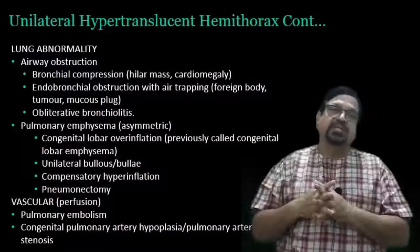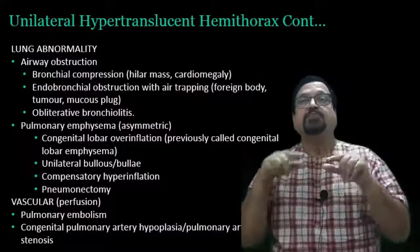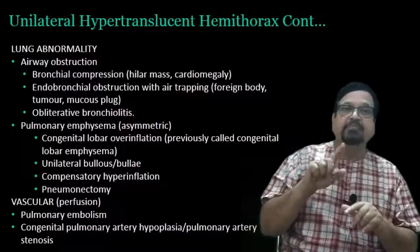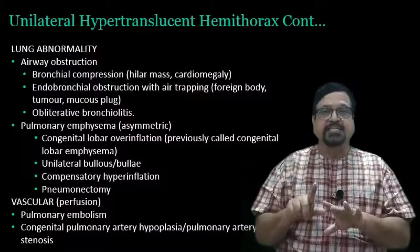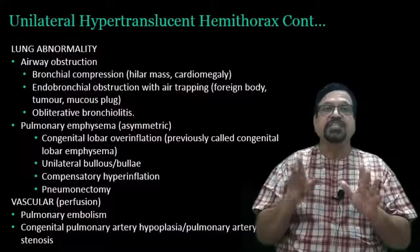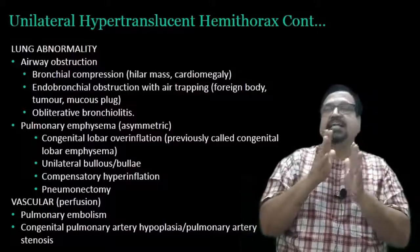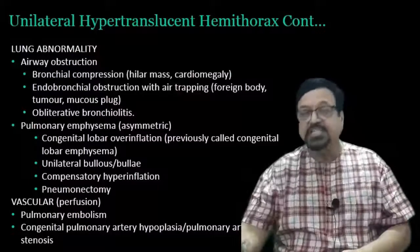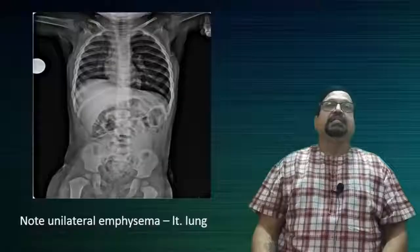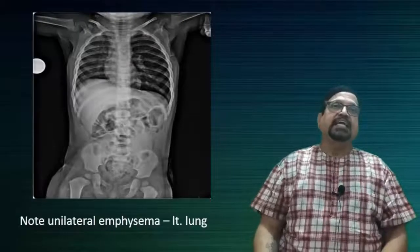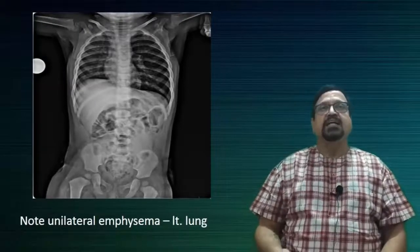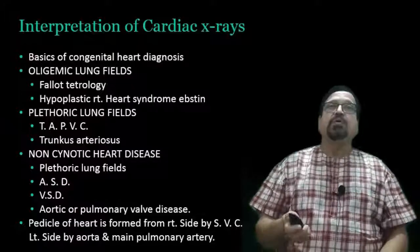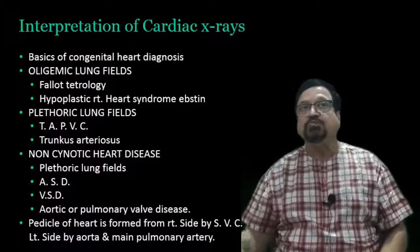Then there are vascular causes. Vascular causes include pulmonary embolism. Second, congenital pulmonary artery hypoplasia or pulmonary artery stenosis. These two conditions cause the ipsilateral - the same side - lung to be hyperlucent. So this has to be borne in mind. Now this is the case we are seeing: unilateral emphysema of the left side.